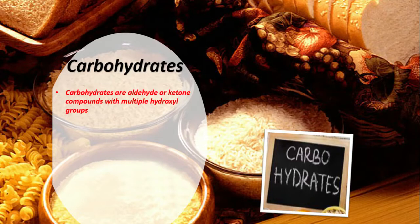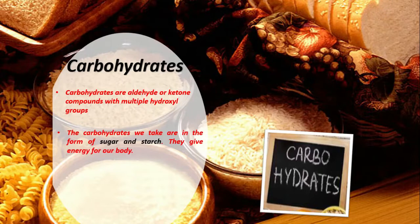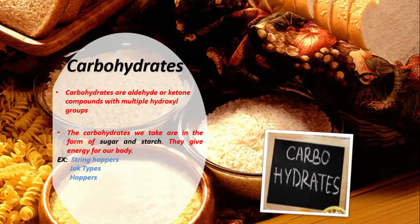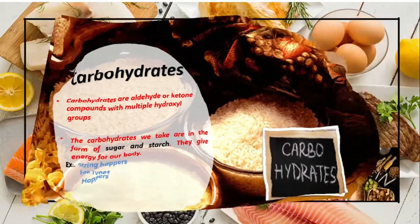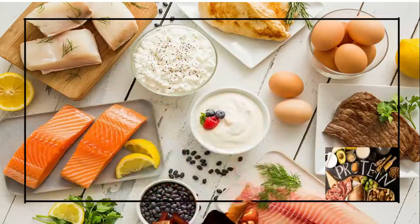First, let's talk about carbohydrates. Carbohydrates are aldehyde or ketone compounds with multiple hydroxide groups. The carbohydrates that we take are in the form of sugar and starch. They give energy. Some important examples of carbohydrates are hoppers, jackfruit types, and string hoppers.